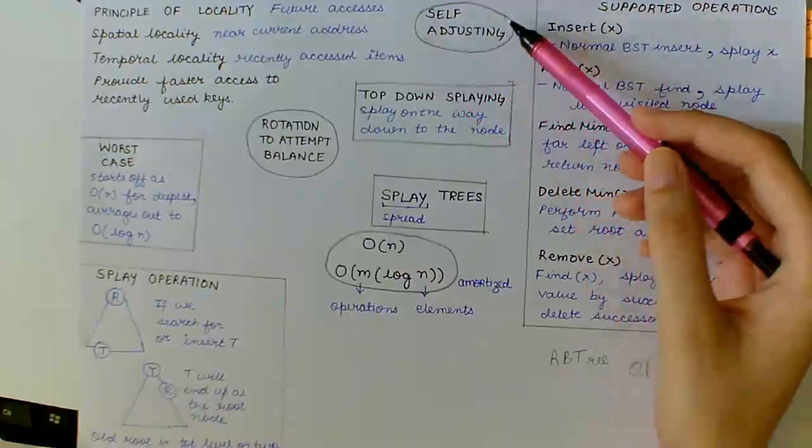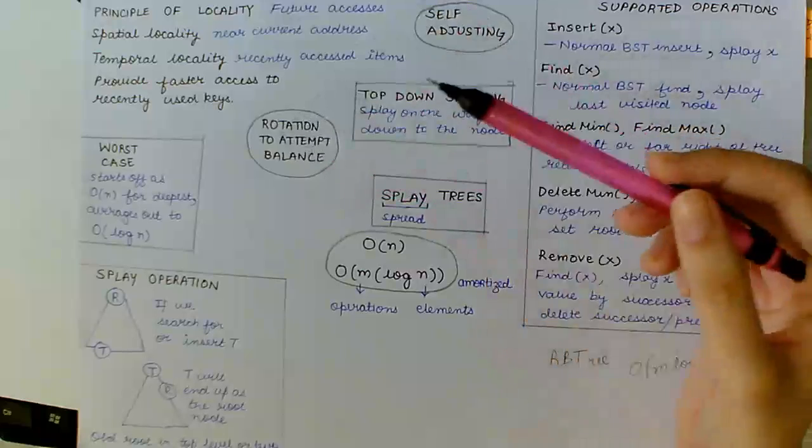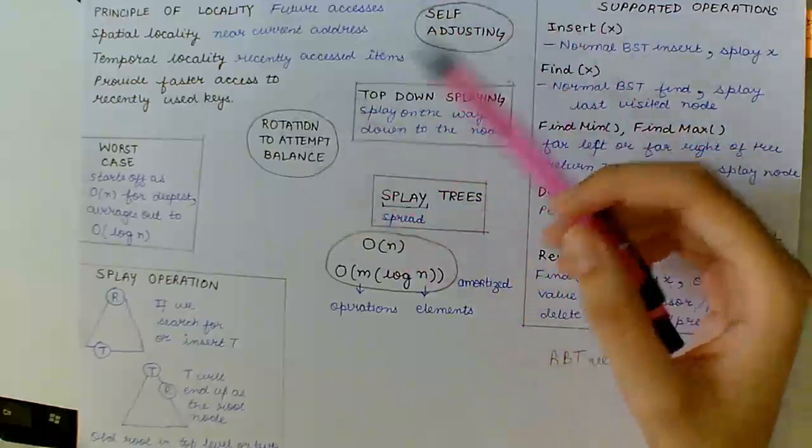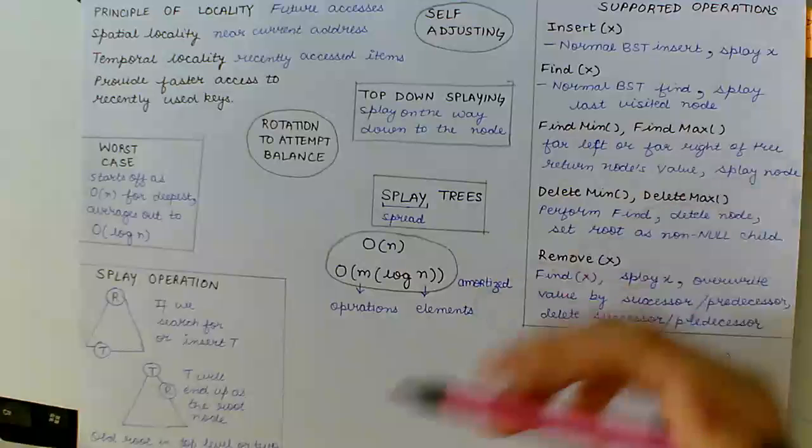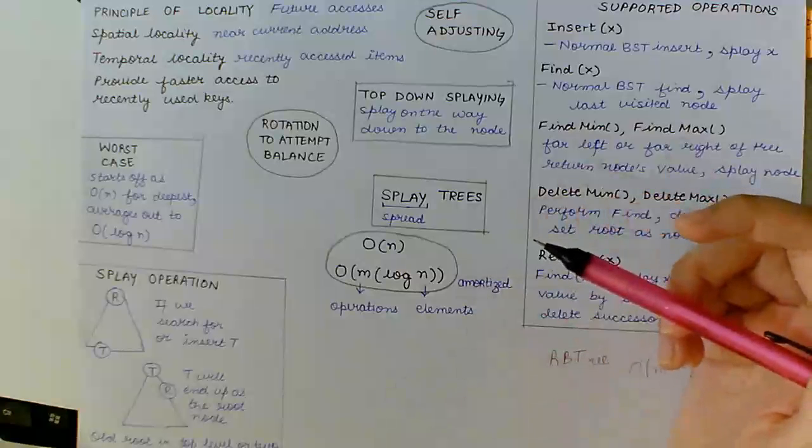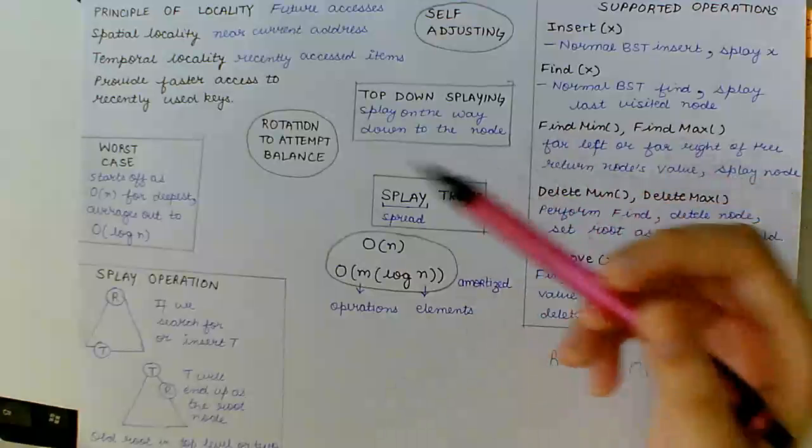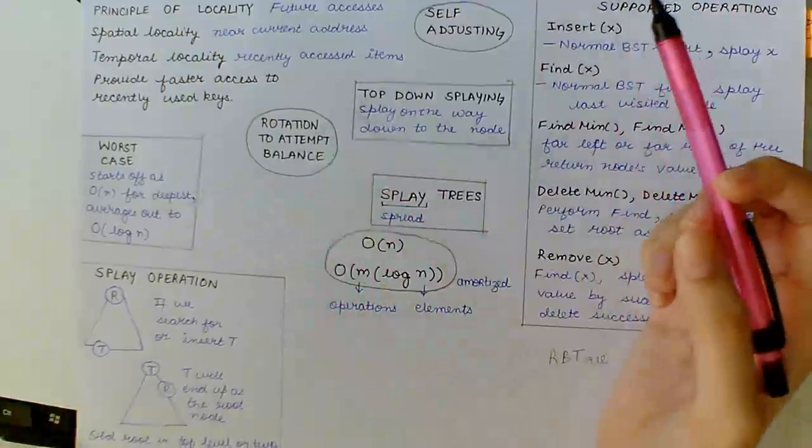Now, the trees are self-adjusting and they use rotation to attempt to balance themselves. So, after many operations, the tree starts looking more and more balanced.